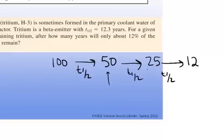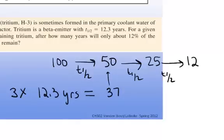So that's one, two, three, the passage of three half-lives. If one half-life is 12.3 years, three times that is 36.9, about 37 years.